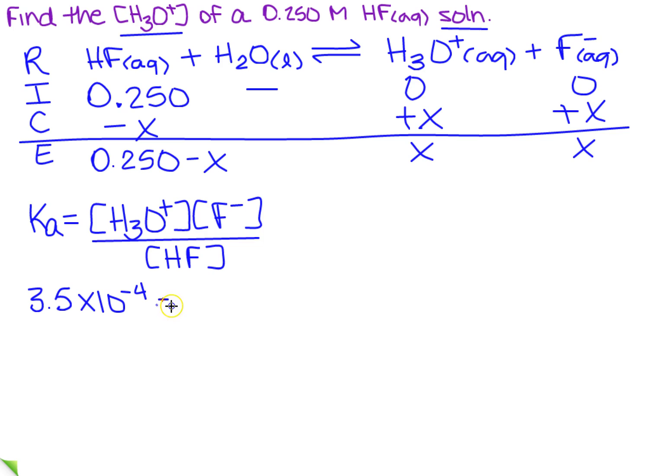And this would equal to X times X over 0.250 minus X. And I sure would like to know if I can do an approximation on that. So there's two ways you can do it. Remember, you can find the approximation and then determine it, or you can get an answer and then make sure it was less than 5%. So let's do the second one. Let's go ahead and just approximate this to be X squared over 0.250.